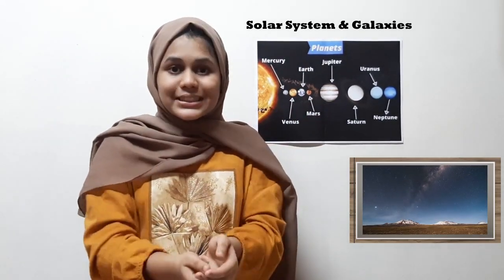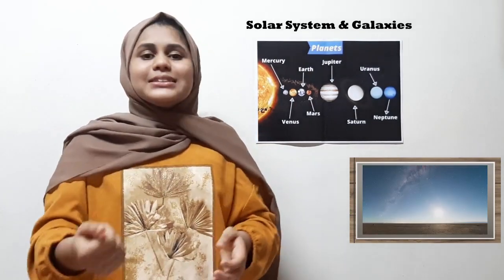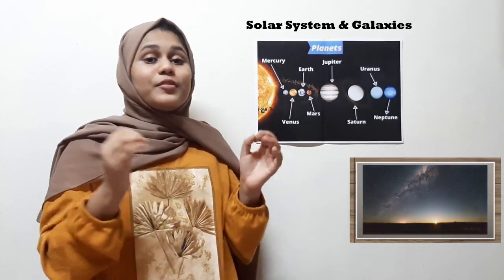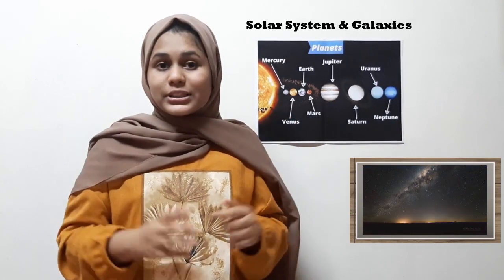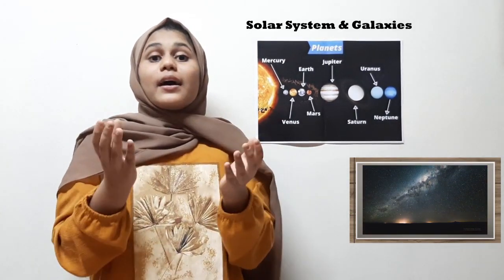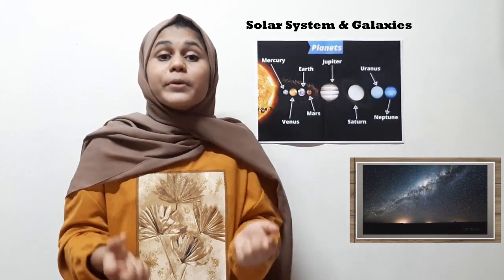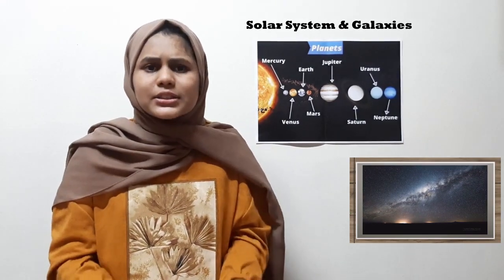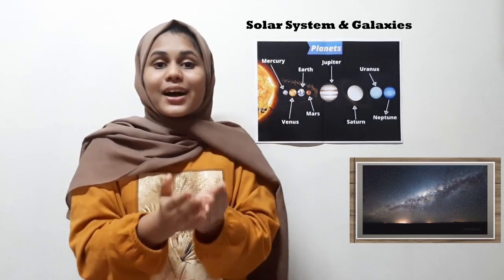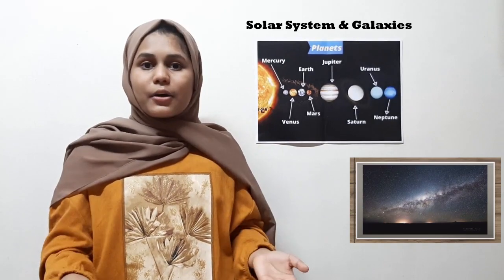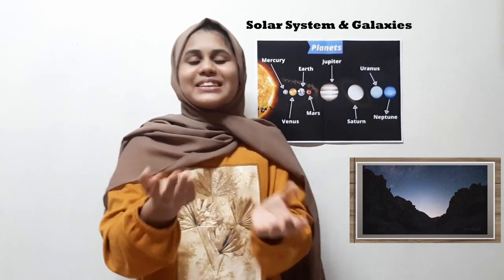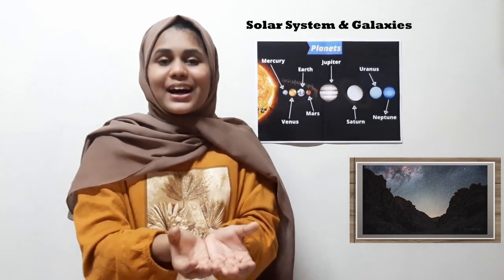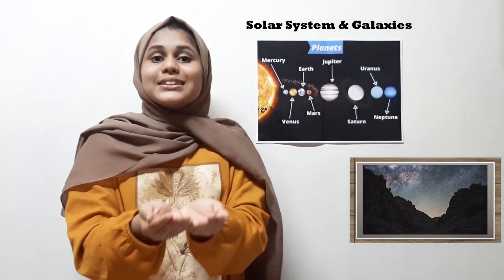Our solar system is officially the most well-known solar system, but astronomers have found 3,200 different systems with stars and planets orbiting around them. As we all know, the Sun is a star — the Sun is the star of our solar system, and the planets orbit around it.